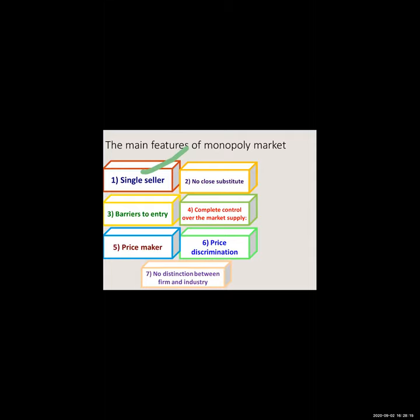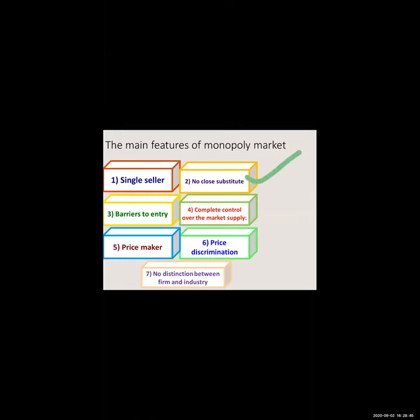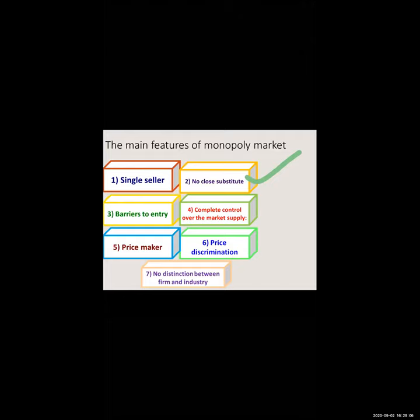Second feature: no close substitute — there are no close substitutes for the product of the monopolist; therefore the buyer has no choice. For example, if I am not comfortable with road or air travel and can only afford railways, I will pay because I want to travel. With electricity — if you don't pay the bill, can you go to another provider? No, because we don't have one. The buyer has no choice — they must either buy the product from the monopolist or go without it. The cross elasticity of demand for the product is either zero or negative.